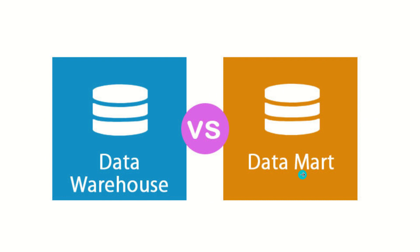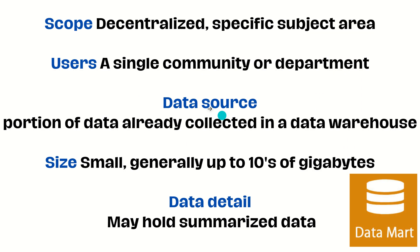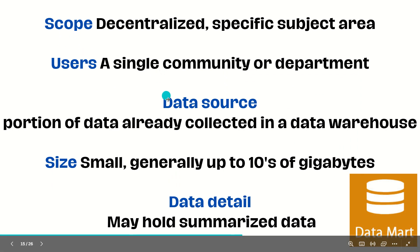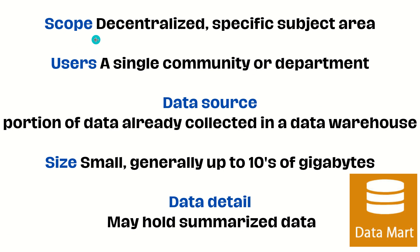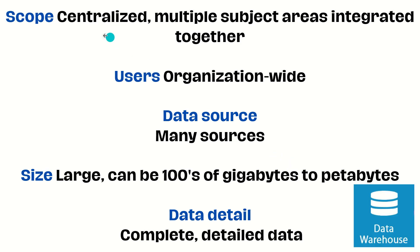Now let's compare these two terms. For a data mart: scope is very limited, decentralized, and specific to a subject area. Users are limited to a particular department or community. The data source is a portion — a subset — of what's already collected in the data warehouse. The size is small, generally up to tens of gigabytes. Data detail contains summarized data, not detailed data.